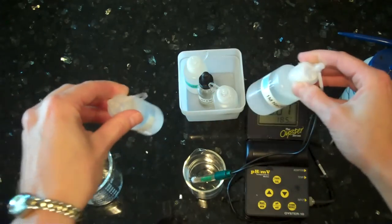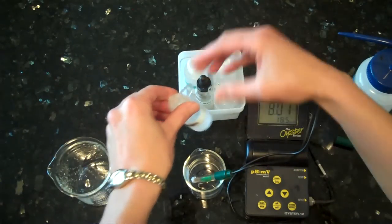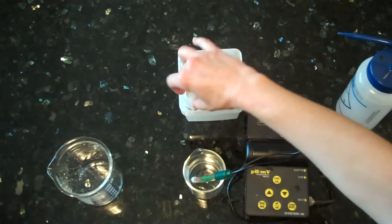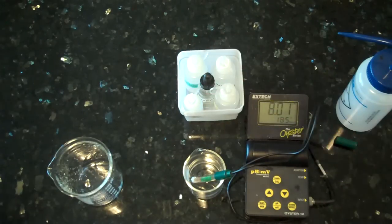If you need to change the pH of the solution, you just add these drop by drop, stir with a stirring rod, not the pH probe, and watch the pH meter until it changes to the desired pH. Once you are all done using